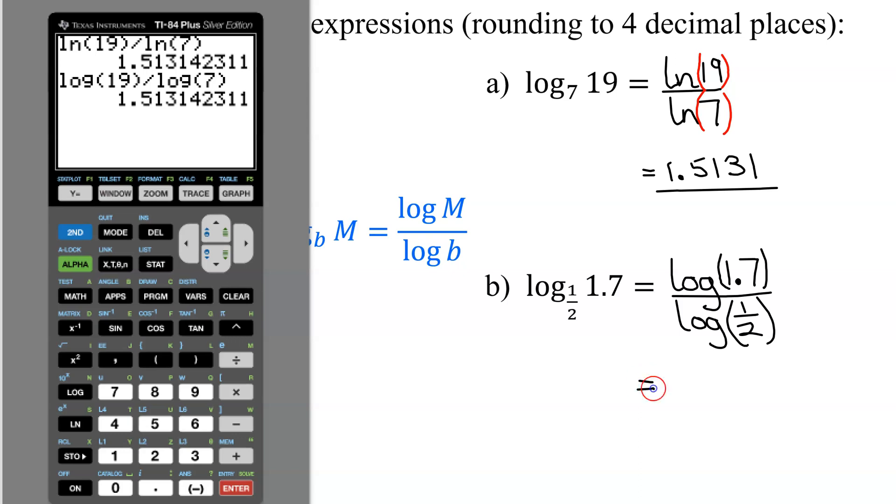Now all I have to do is put that in the calculator. Here's the common log of 1.7. Close the parentheses, divided by the common log of my base, which is 1 divided by 2. And hit enter.